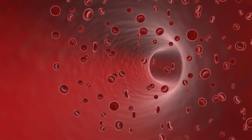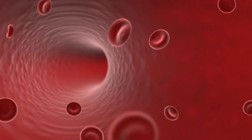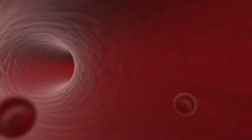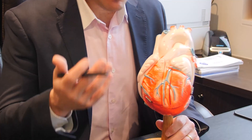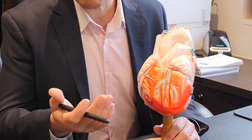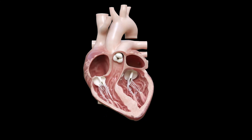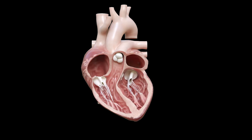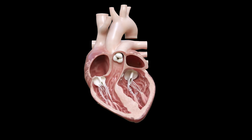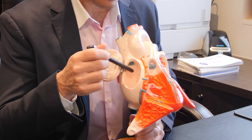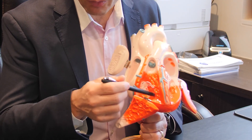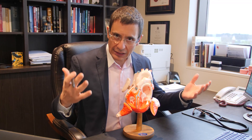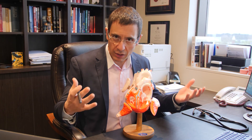All these arteries supply oxygen and blood to the heart muscle itself, essentially pumping to deliver nutrients and blood and oxygen to the body. The other part of the heart is the heart valves. Looking inside the heart internally, the heart is made up of four chambers — one called the right atrium, and blood then goes into another chamber called the right ventricle. Blood then goes into the lungs to be oxygenated.